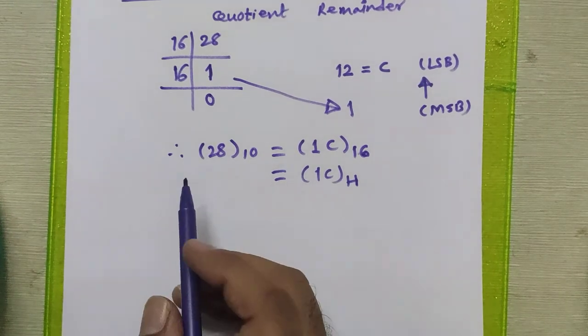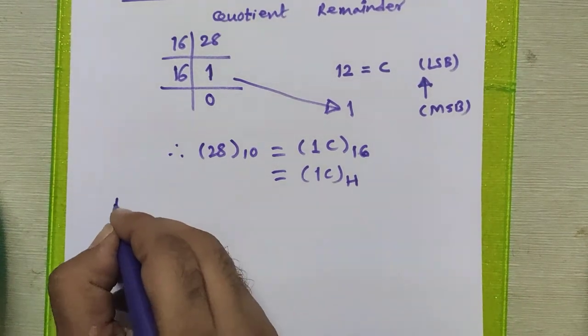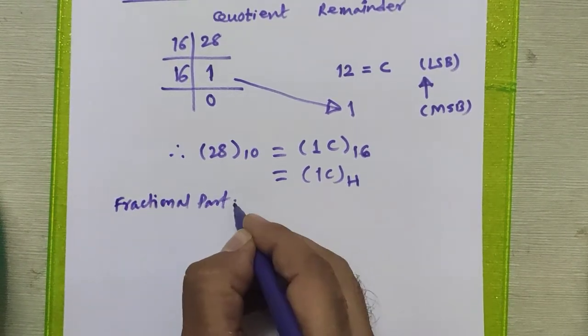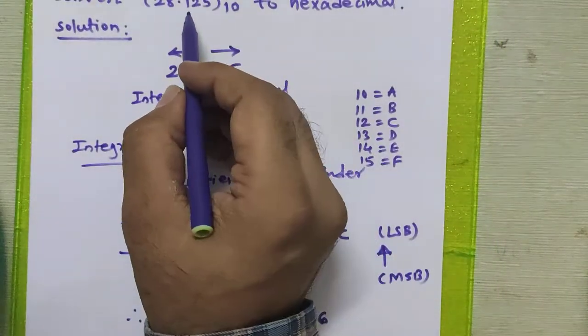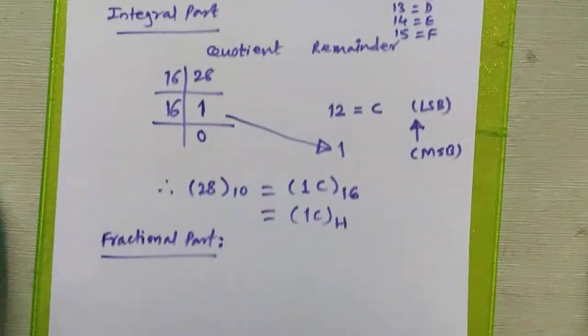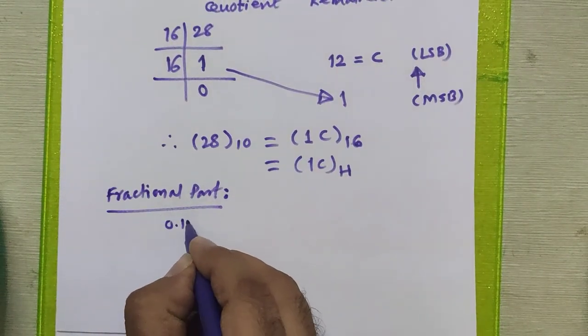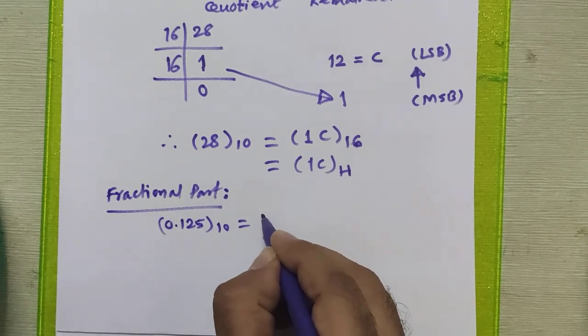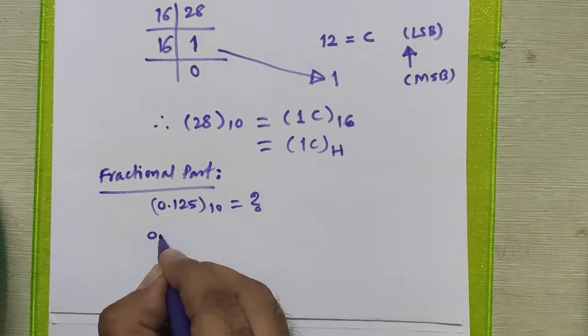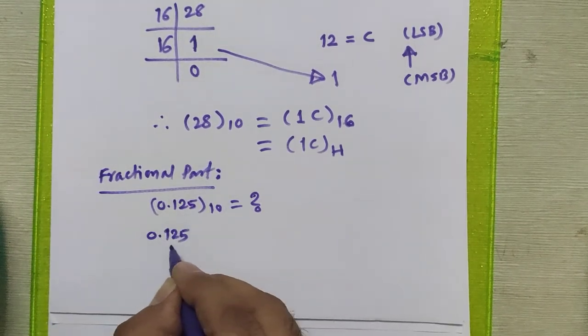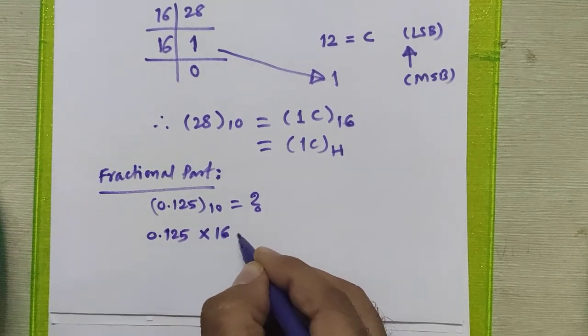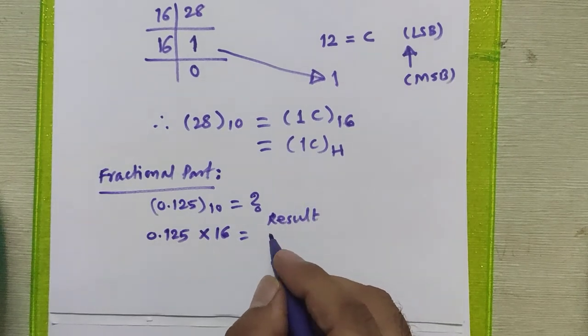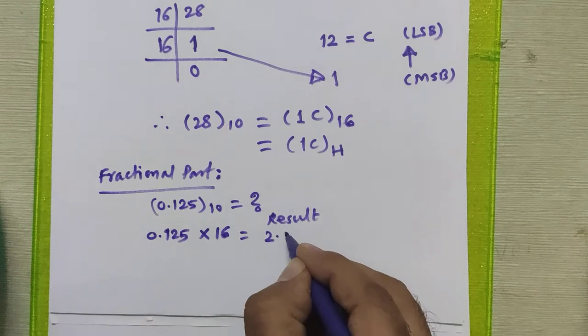Now we will see the procedure for converting a fractional part to hexadecimal. The fractional part given was 0.125. We multiply this fractional part, 0.125, by 16, and in the result column we get 2.000.